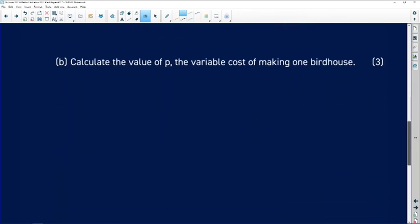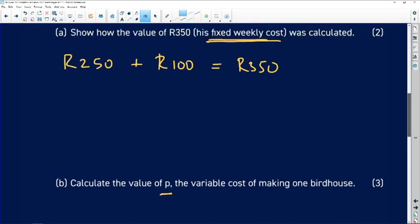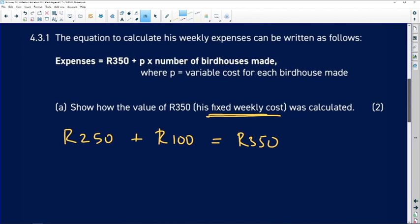Calculate the value of p, the variable cost of making one birdhouse. We need to use the formula that we have already been given.